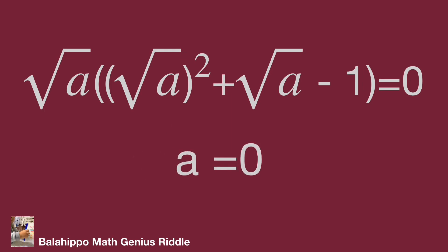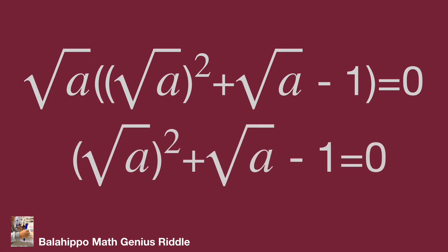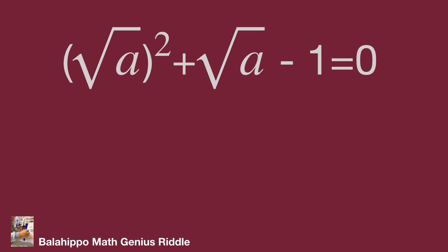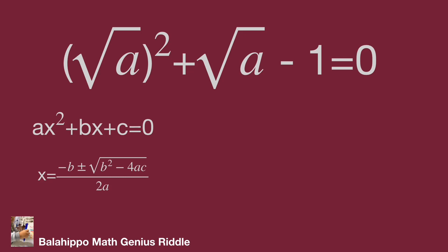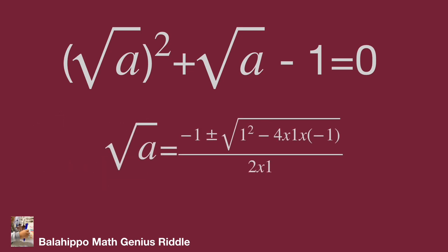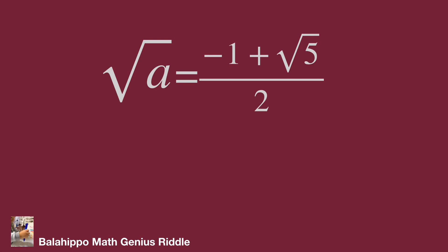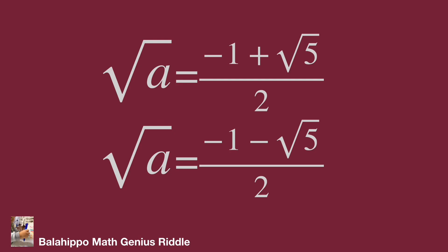The other factor gives: (√A)² plus √A minus 1 equals 0. Treat this as a standard quadratic equation in √A. Using the quadratic formula x equals negative b plus or minus square root of b squared minus 4ac, all over 2a, we substitute to get: √A equals negative 1 plus or minus square root of 1 squared minus 4 times 1 times negative 1, all over 2 times 1. This gives √A equals (negative 1 plus √5) over 2 and (negative 1 minus √5) over 2.